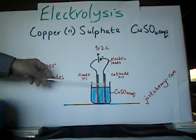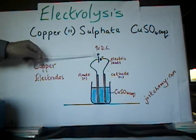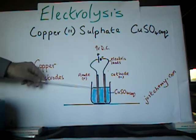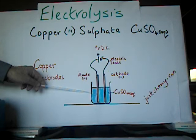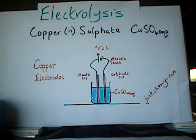We have copper electrodes dipping into a solution of copper sulfate. And on the left here, this is the electrode connected to the positive terminal. So that's the anode. And over here, this is the cathode. Both electrodes are made of copper.